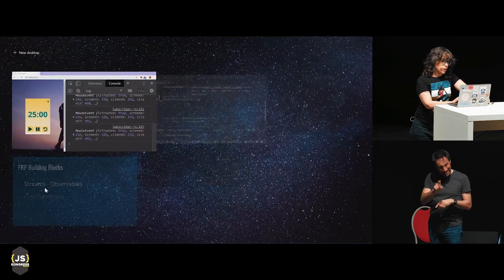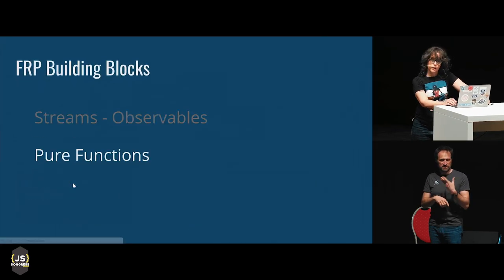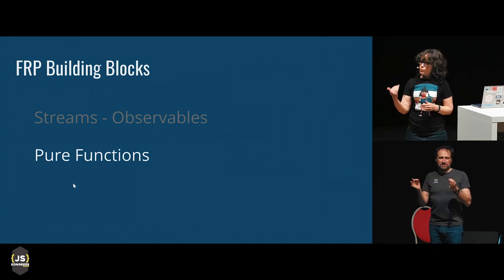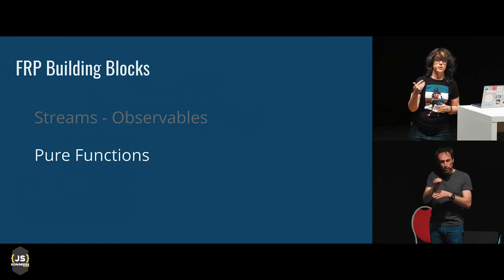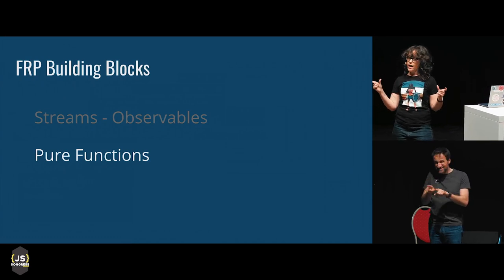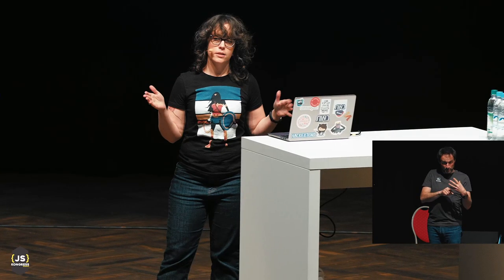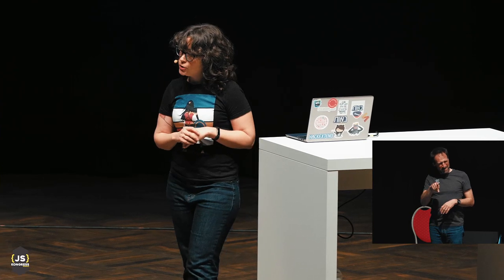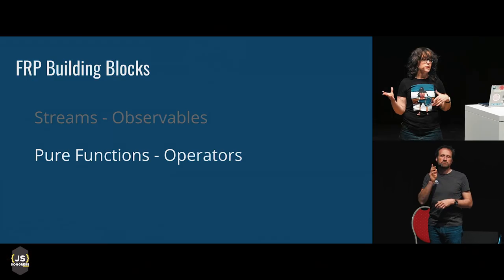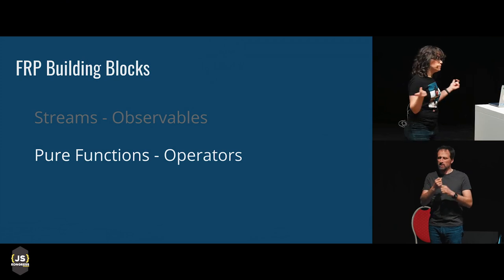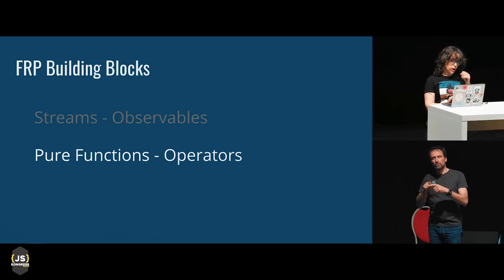The second building block we have here is pure functions. These are functions that have explicit inputs and explicit and consistent outputs — they return the same output for the same input every time, and they have no side effects. The way we most often see this in FRP is through operators — pure functions that take a stream as an input and return a new stream as an output.